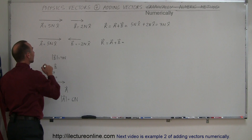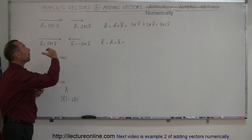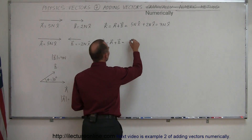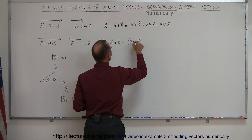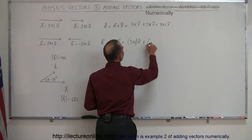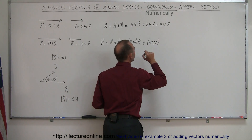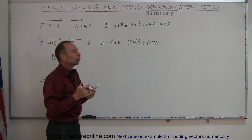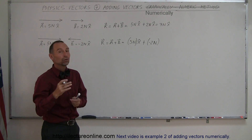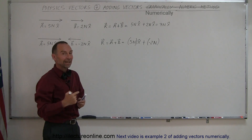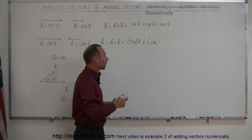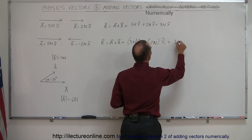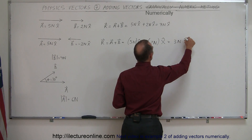In our second example, the B vector is now pointing in the opposite direction. So when we add the two vectors together, we get 5 Newtons in the x-direction plus a negative 2 Newtons. A negative 2 Newtons simply means it's in the negative direction — there's no such thing as a negative 2 Newtons of force. You can have 2 Newtons of force in the negative x-direction, and that's what the negative means. So the sum is 3 Newtons in the x-direction.